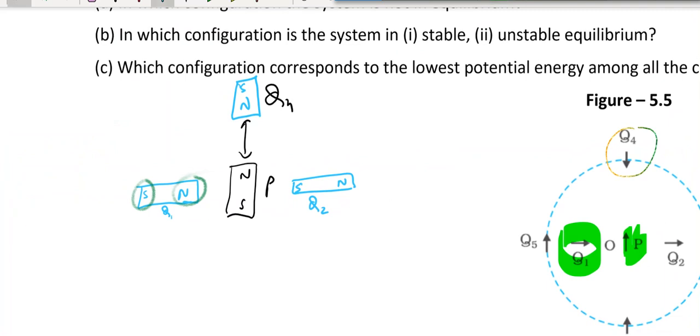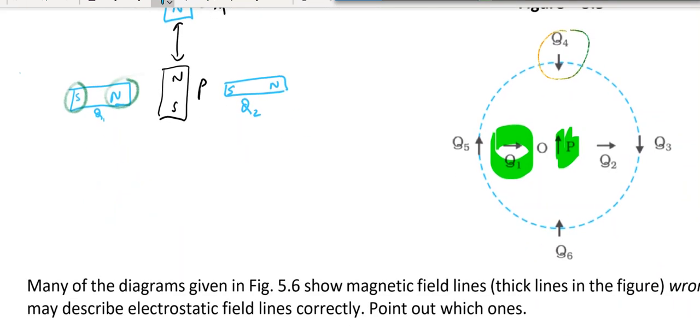But what if I look at q5? q5 is here. Now for this, let me draw another diagram. First I think I should take other magnet q6. Let us first take q6. q6 is here.